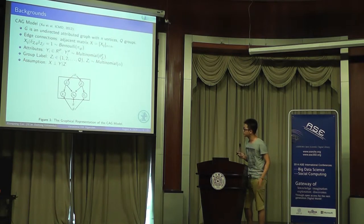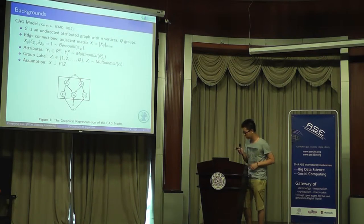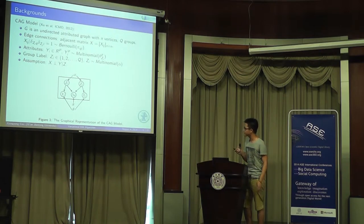The graphical representation of the CAG model is summarized in figure one. X_ij, y_i, z_i are variables. And alpha, pi, theta are parameters.